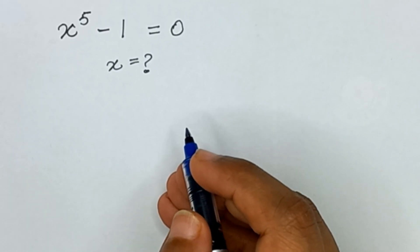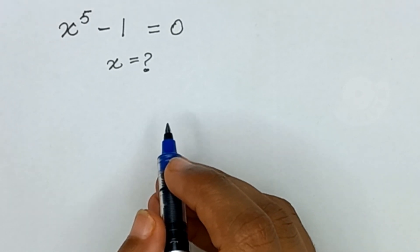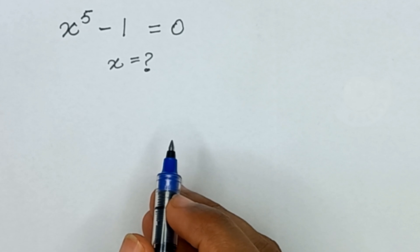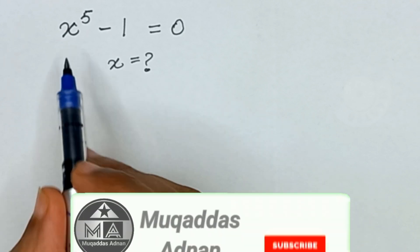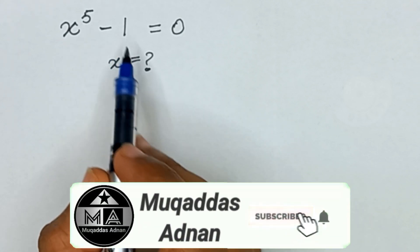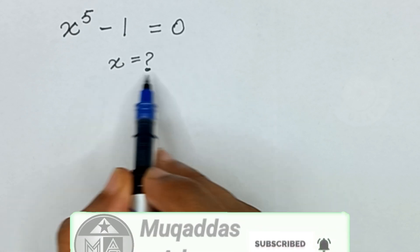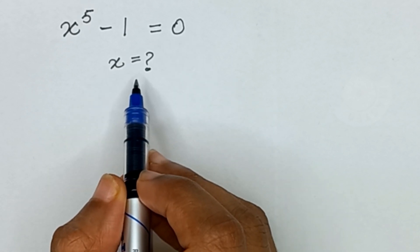Assalam o Alaikum friends, welcome back to my channel. Hope you all are fine. Today I have a question: x raised to the power 5 minus 1 is equal to 0, and we have to find the value of x.